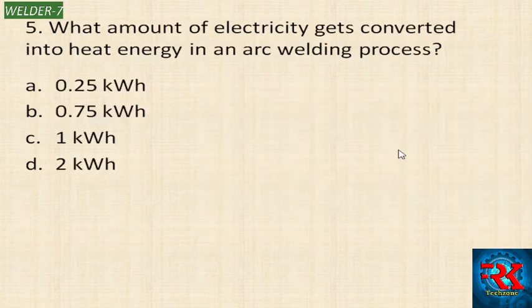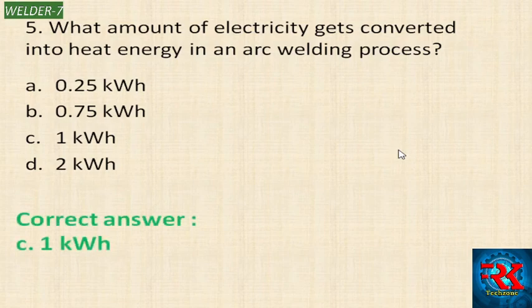What amount of electricity gets converted into heat energy in an arc welding process? In the arc welding process, how much energy is converted into heat energy? The options are: 0.25 kWh, 0.75 kWh, 1 kWh, and 2 kWh.